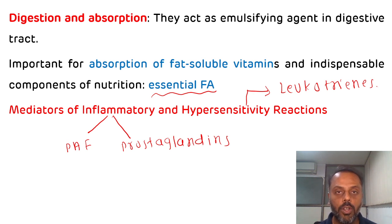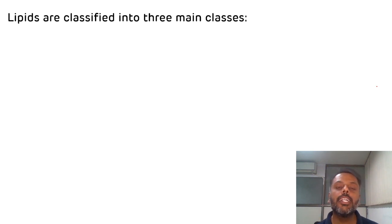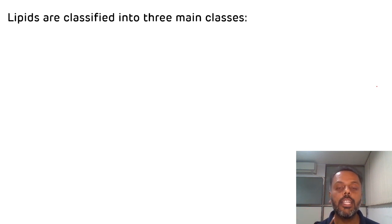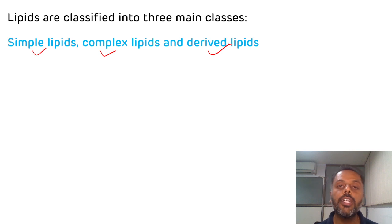Now we will see the classification of lipid. Lipids are mainly classified into three main classes: first is simple lipid, second is complex lipid, and the third is derived lipid. First we will discuss simple lipid.